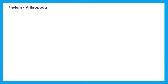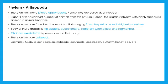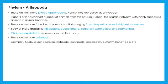Let us move to the next phylum — Arthropoda. It is the largest phylum, containing the highest number of animals on earth. These are multicellular, triploblastic, eucoelomate, segmented animals having bilateral symmetry and jointed appendages. They are omnipresent — found everywhere in soil, air, and water. They are unisexual animals, having a semi-transparent cover made up of chitin on their body. Examples include crab, spider, scorpion, and cockroach.